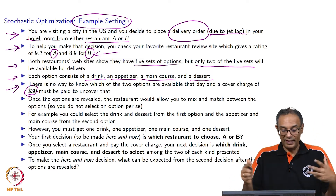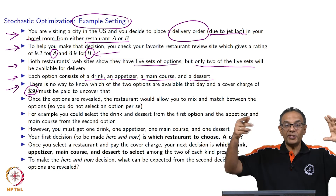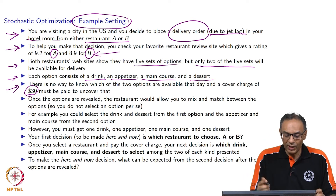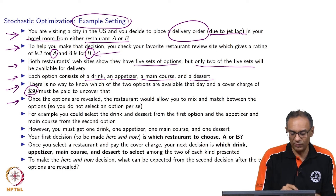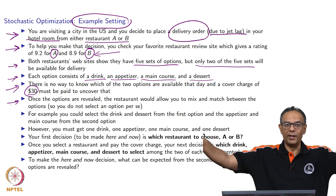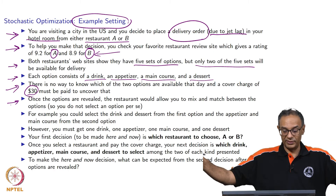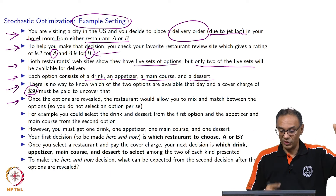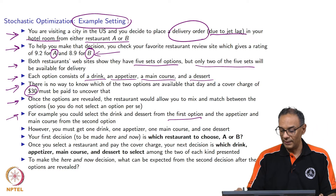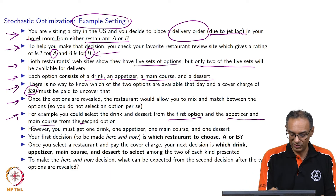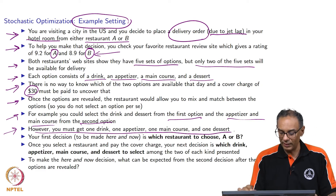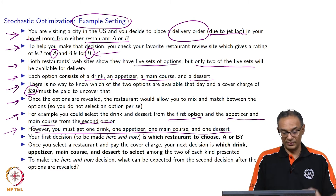Once you pay and those two choices are revealed, the restaurant will allow you to mix and match. You don't have to select one complete option or the other. You can pick one item from one choice and another item from the other. For example, you can pick the drink and dessert from the first choice, and the appetizer and main course from the second choice. But you must get one of each — one drink, one appetizer, one main course, and one dessert.